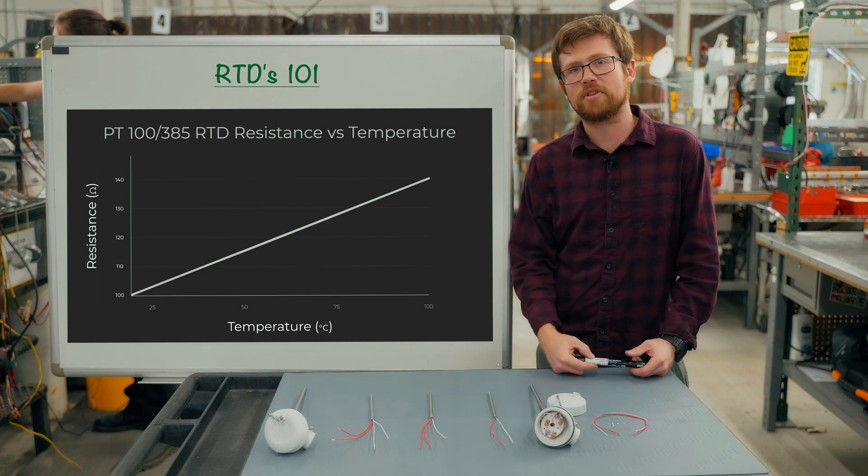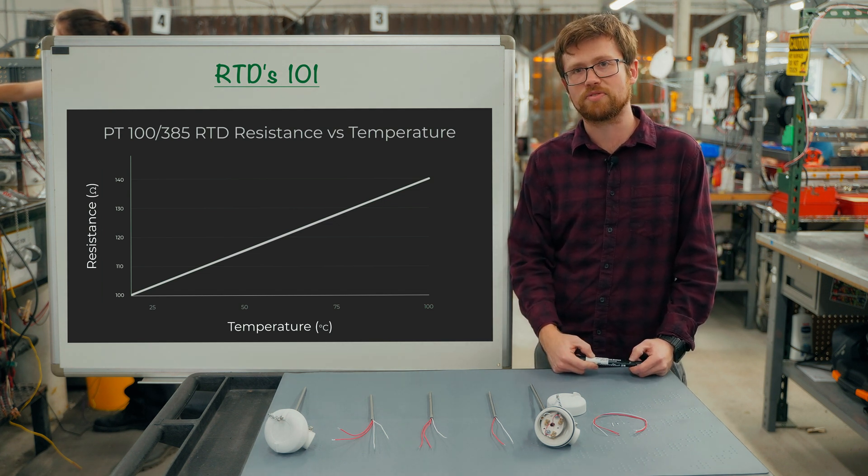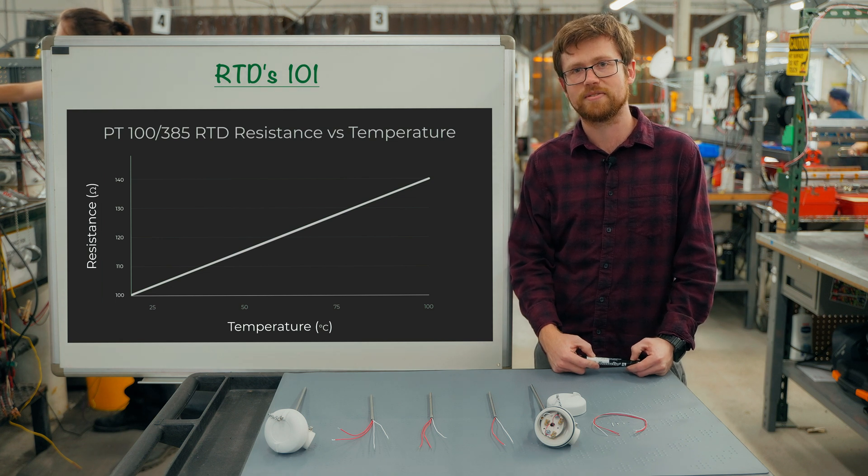The curve isn't perfectly linear, but the actual values are well known and published for RTDs of all different resistances and alphas.